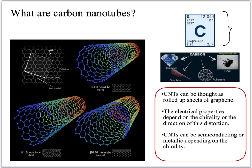Carbon can exist in nature in many allotropic forms. For example, it can exist as diamond, graphite, fullerene, or soot, and that depends on the structural arrangements of the carbon atoms in each of these forms.